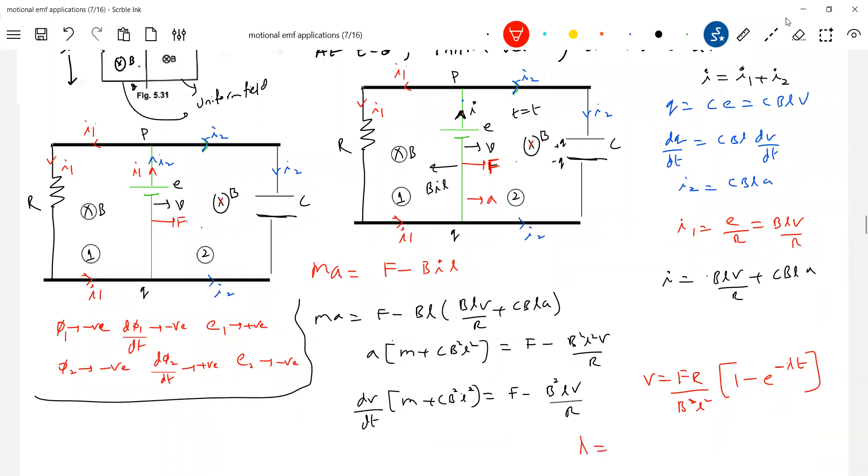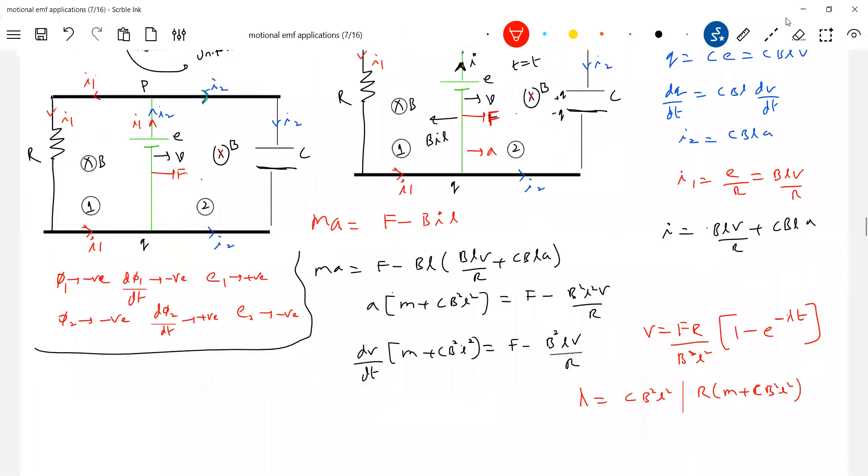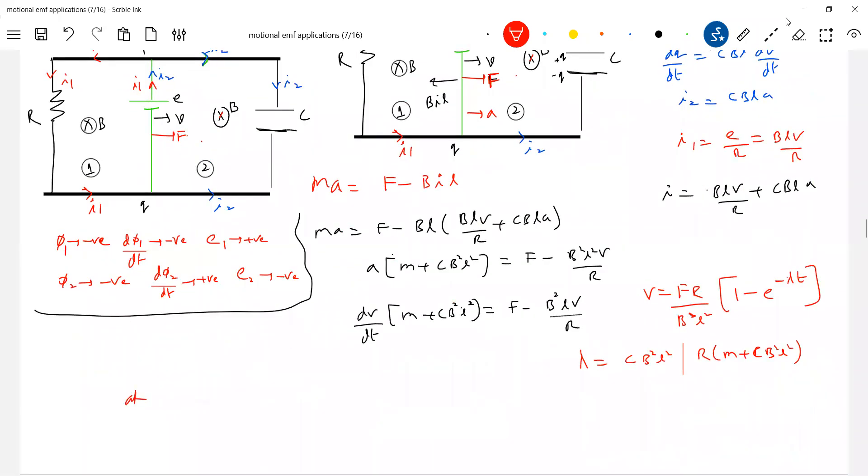The charge across capacitor remains constant, but there'll be flow of current in the circuit. Actually, there won't be flow of current. It will attain terminal velocity. Mathematically, get expression for V as a function of time. I derived it: V equals FR over B squared L squared times 1 minus e to the power of minus lambda t, where lambda is R plus CB squared L squared over...